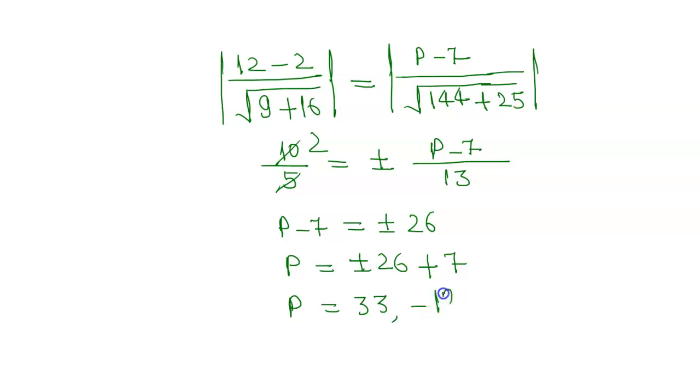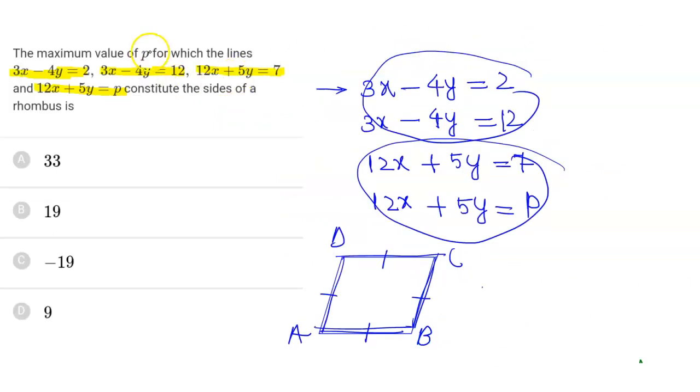The question asks for the maximum value of p for which the lines constitute the sides of a rhombus. The maximum value is 33.